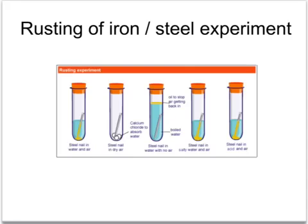The steel nail in the third tube is in contact with water only. There's no air in the water because the water has been boiled, which drives off any dissolved gases. To make sure no gases get back into the water afterwards, the water has been covered with a layer of oil.